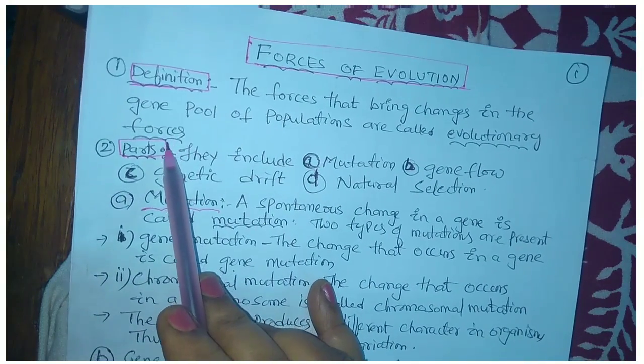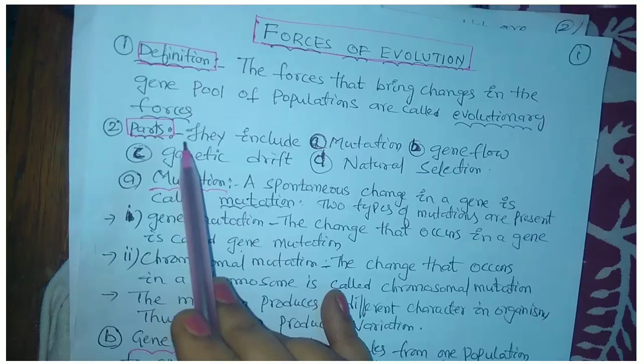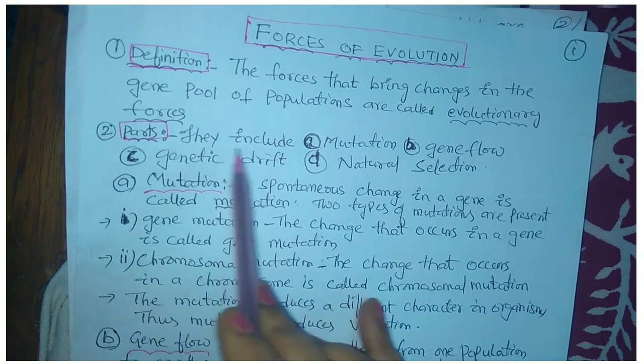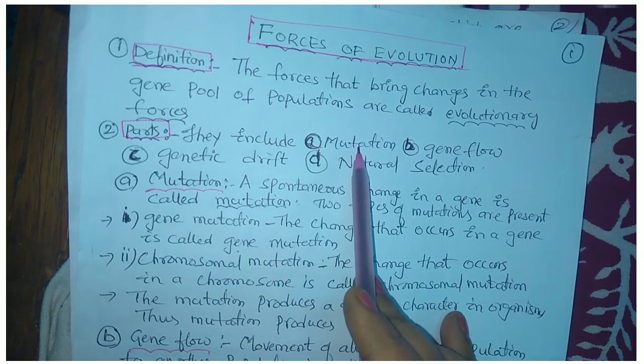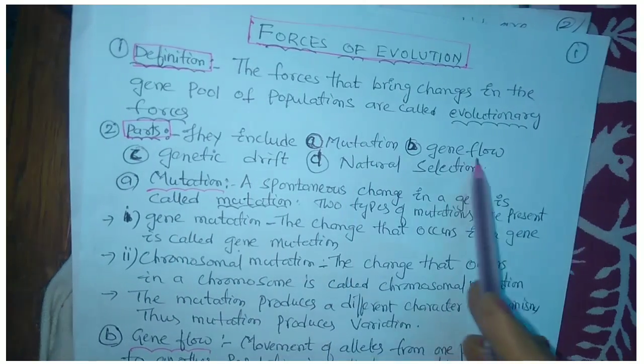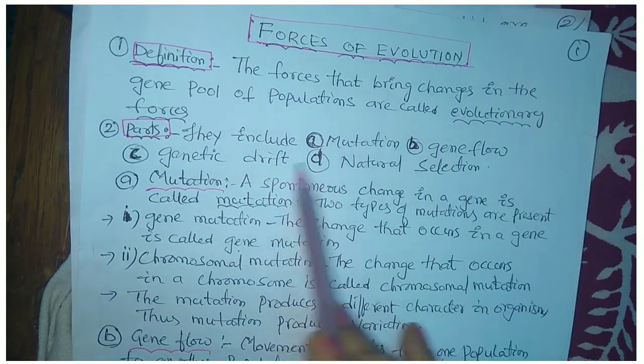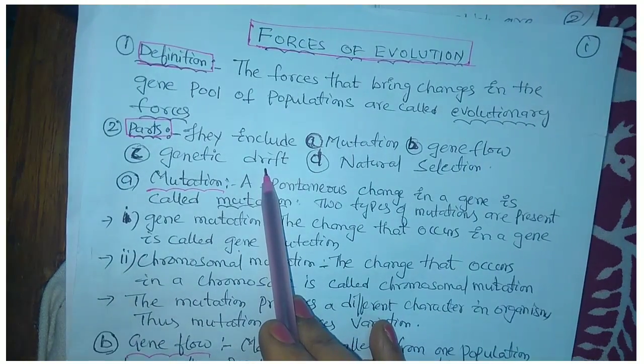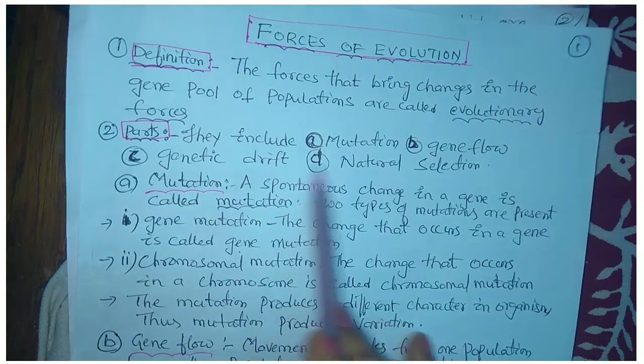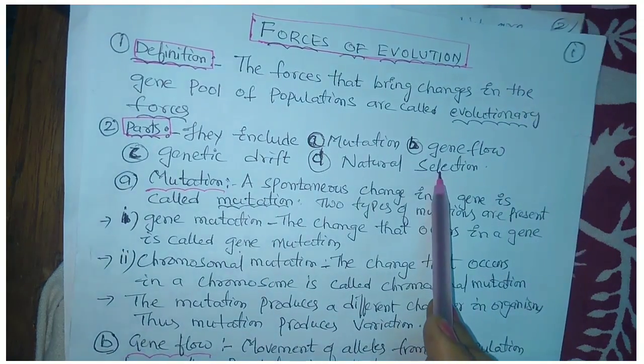What parts are included in this topic? They include mutation, gene flow, genetic drift, and natural selection.